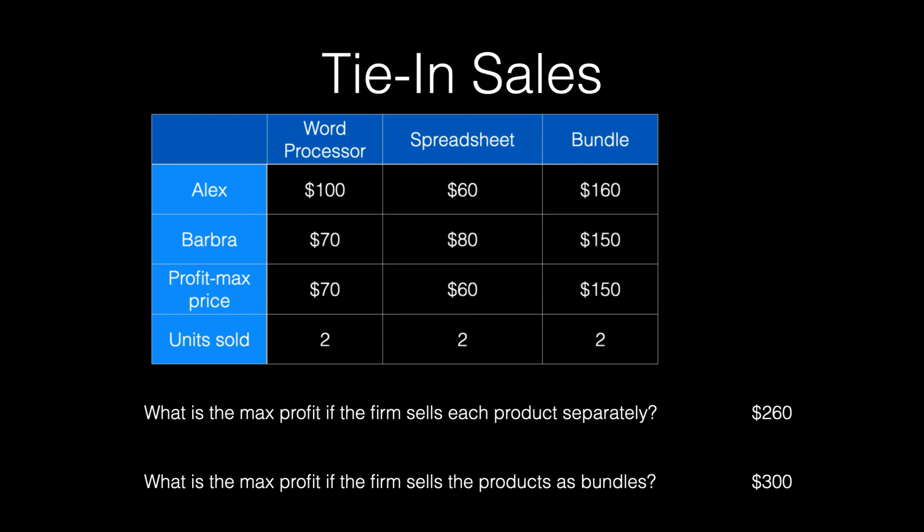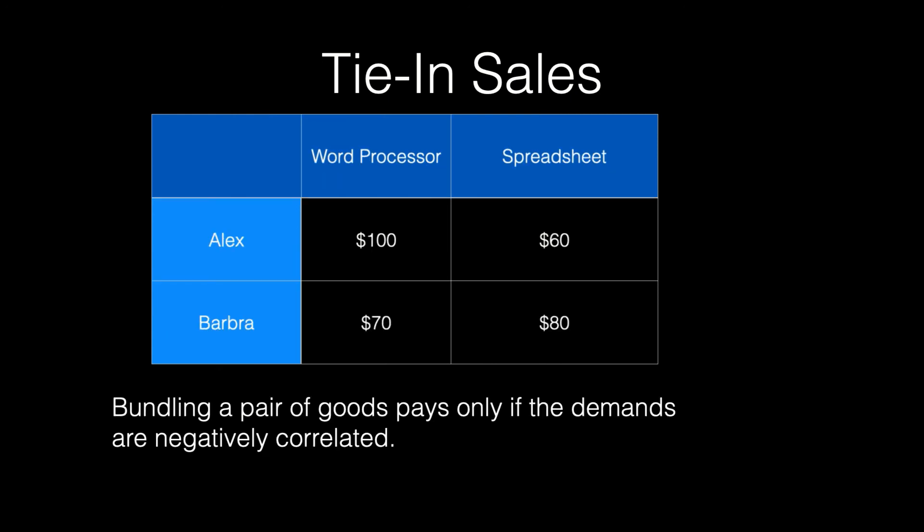So bundling in this situation will enable the firm to earn higher profits than it could earn pricing the products separately. The reason that bundling increases profits in this case is because the demands for the two consumers are negatively correlated. That is, Alex has higher willingness to pay for the word processor than Barbara, and Barbara has a higher willingness to pay for the spreadsheet than Alex. So when making pricing decisions for a business, if consumers' willingness to pay for products is negatively correlated, then selling products as a bundle may increase profits.